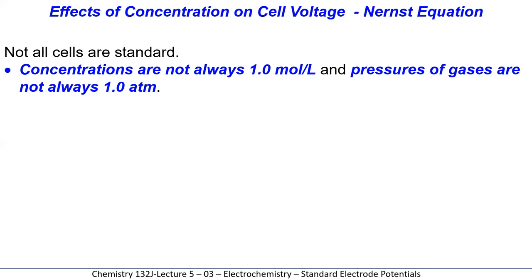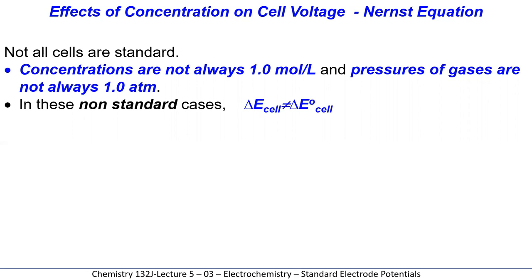Remember, not all cells are standard. They don't always have concentrations that are one mole per liter, and the pressures of gases in the standard hydrogen half cell are not always one atmosphere. If it is a standard hydrogen half cell it is one atmosphere, but you can have other conditions for cells that are not standard. In this case, the voltage of the cell is not equal to the voltage of the standard cell under standard conditions.